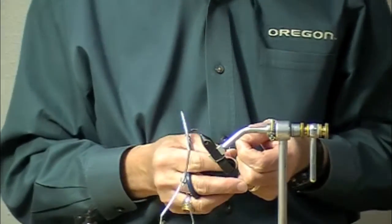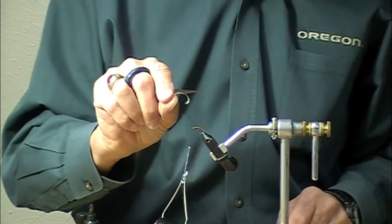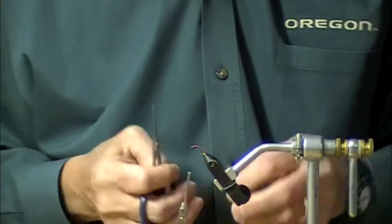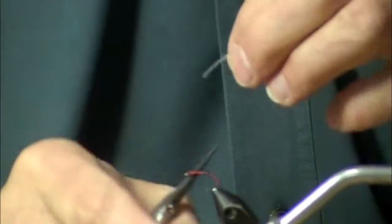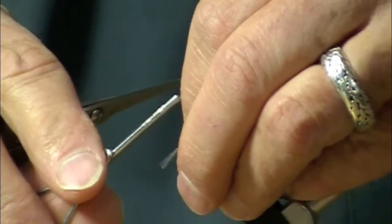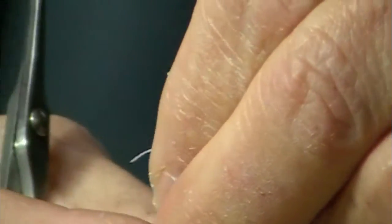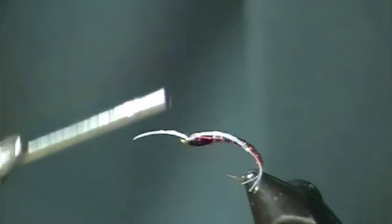Now for something different for the gills, I've got the Lagerton braid in pearl and I'm just going to figure-eight this on. And this is one of the reasons for going to the smaller thread.